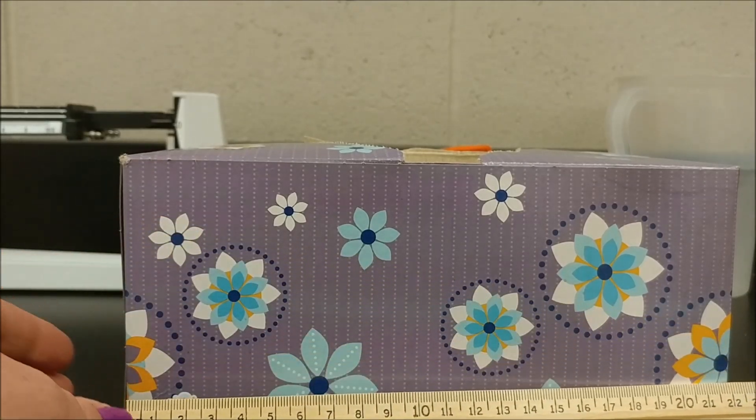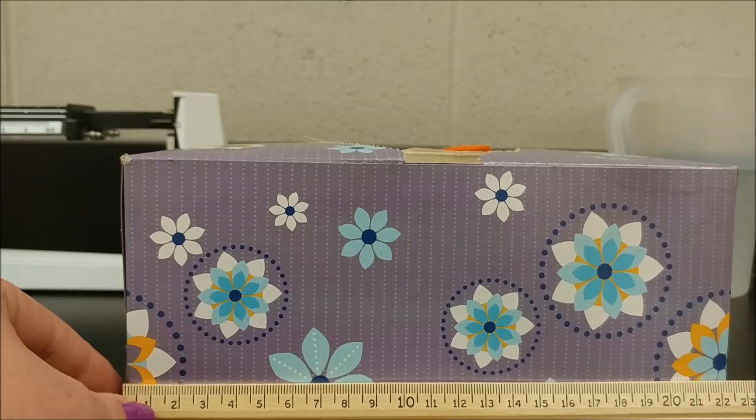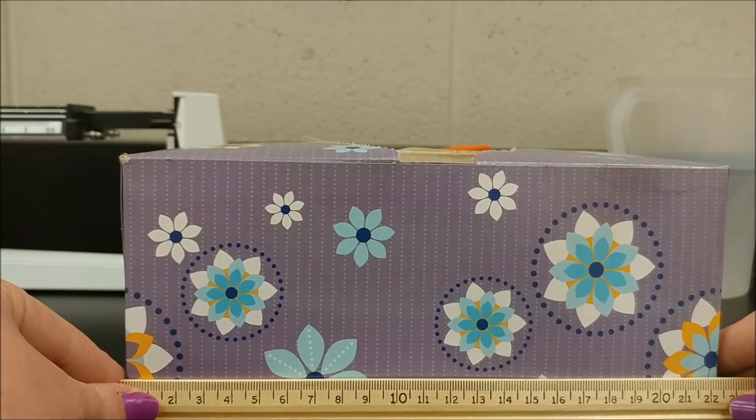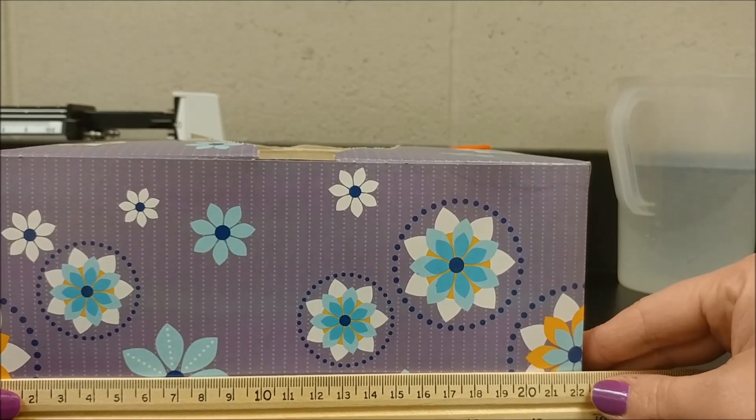I'm lining the zero edge up with this side of the tissue box, and then I'm going to look to see where it crosses the other part of the ruler.